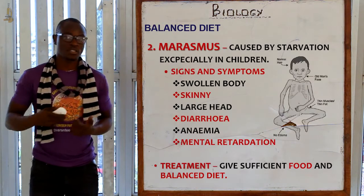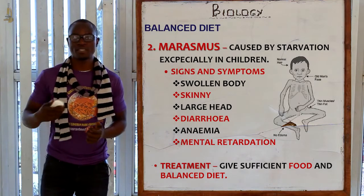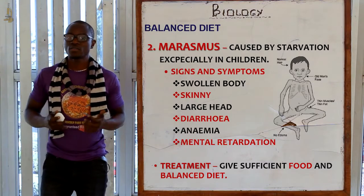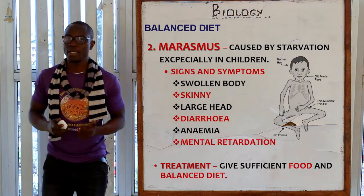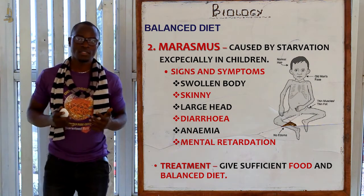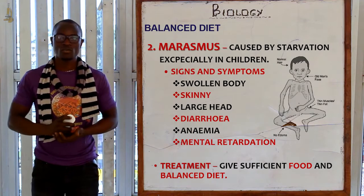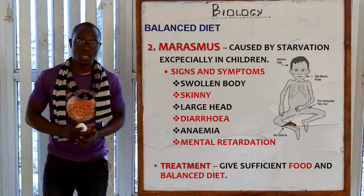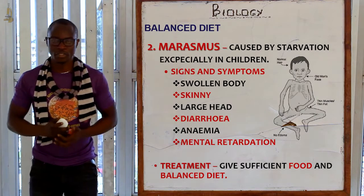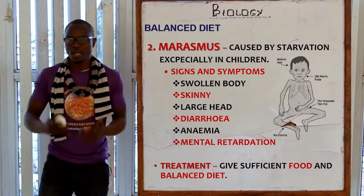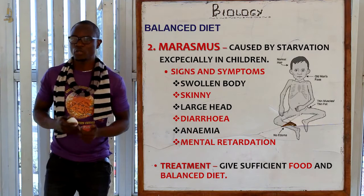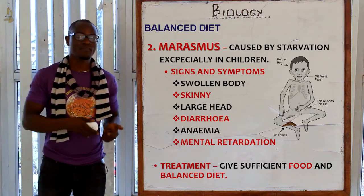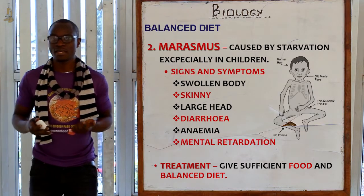The next condition is marasmus, which is mainly caused by starvation, especially in young children. Signs and symptoms include a swollen body, very thin skin, and a very large head. These people may also show diarrhea symptoms, anemic symptoms, and some signs of mental retardation. The treatment is to give sufficient food and a balanced diet, since the main cause is starvation.